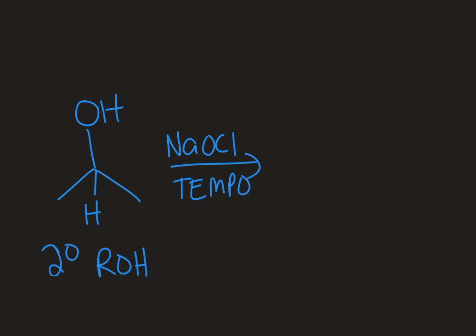When we have a secondary alcohol — a carbon with an alcohol on it that has two other carbons attached and only one hydrogen atom drawn out — the only possible oxidation product you can get is a ketone, because you can only remove that one H. So regardless of how much bleach I use, my end product is going to be a ketone. Mechanistically, it looks the same.